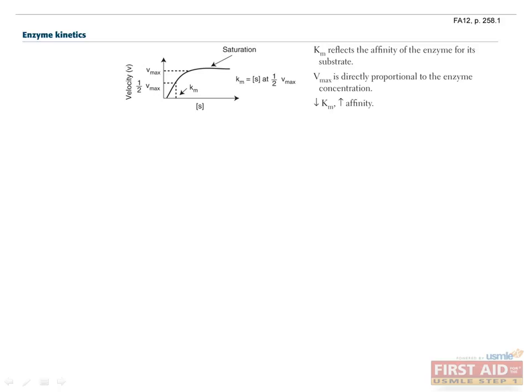Km is a measure of an enzyme's affinity for its substrate, and is defined as the substrate concentration at one-half Vmax. So a high Km actually reflects a low affinity, and a low Km reflects a high affinity. Another way to think of Km is in terms of potency. For now, just know that a low Km reflects a high potency.